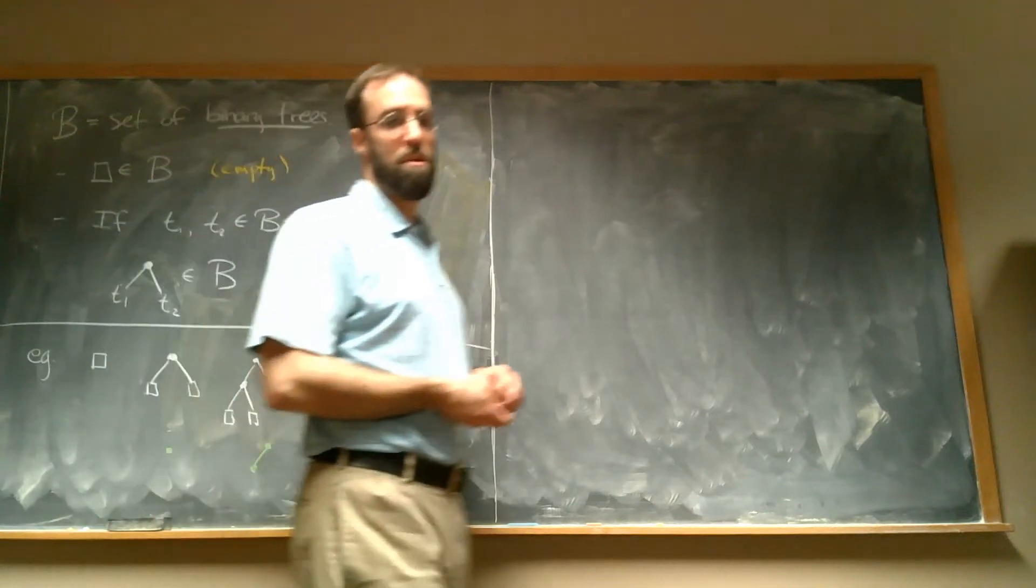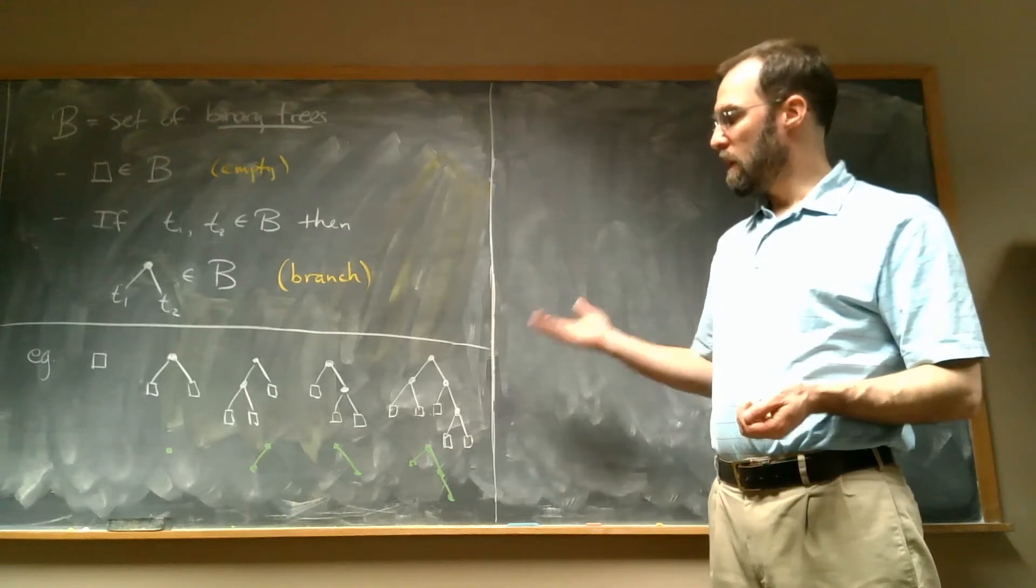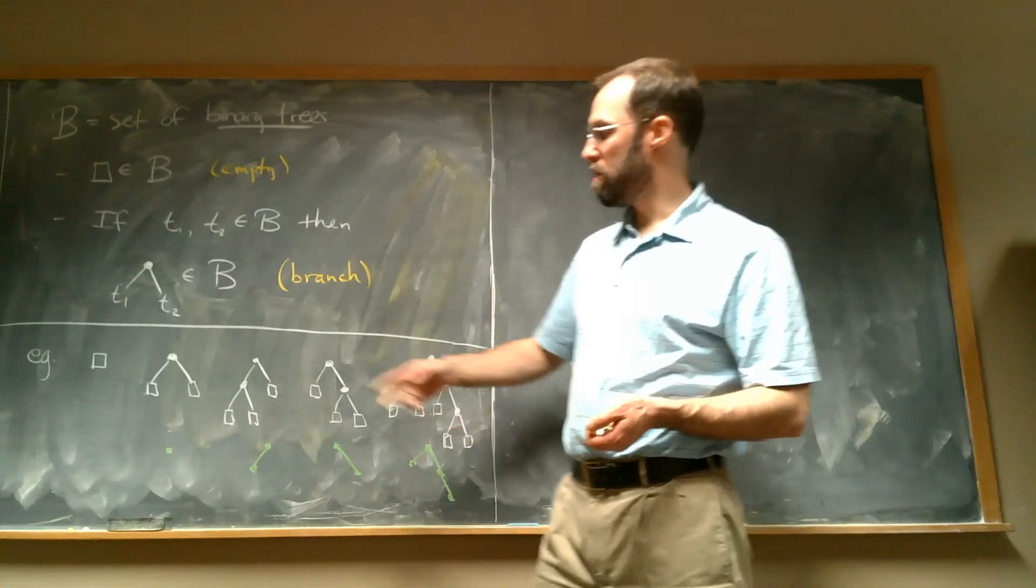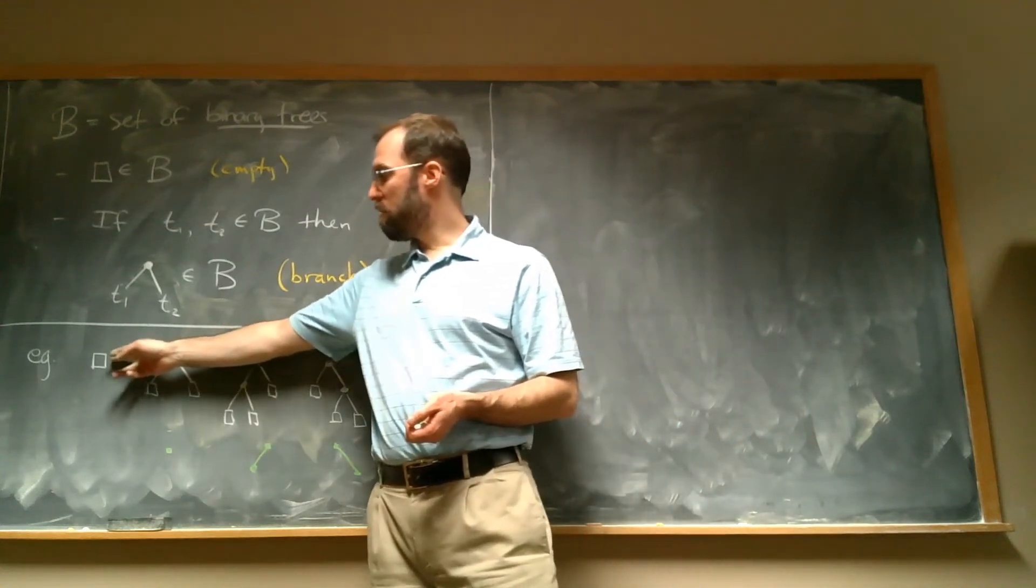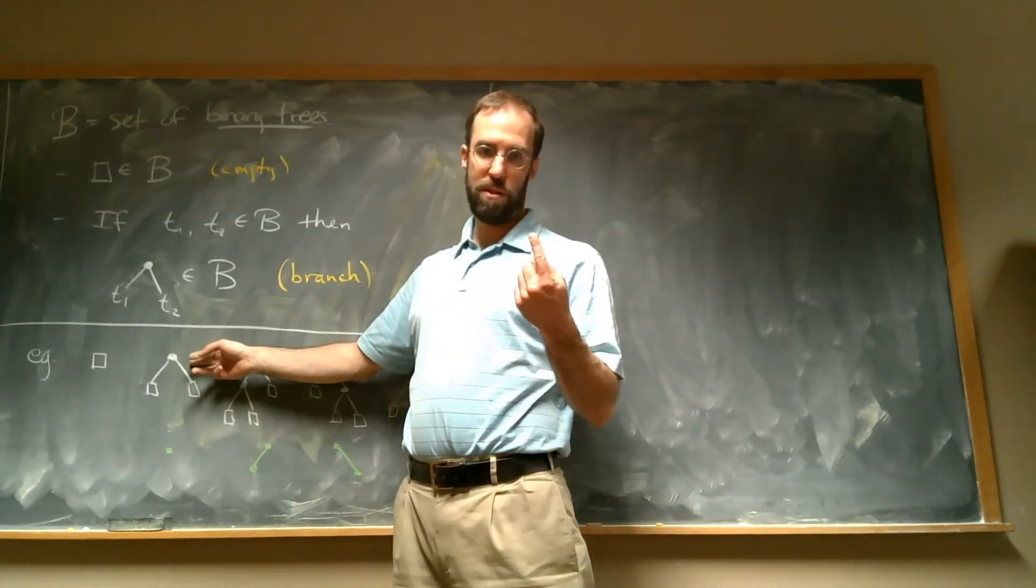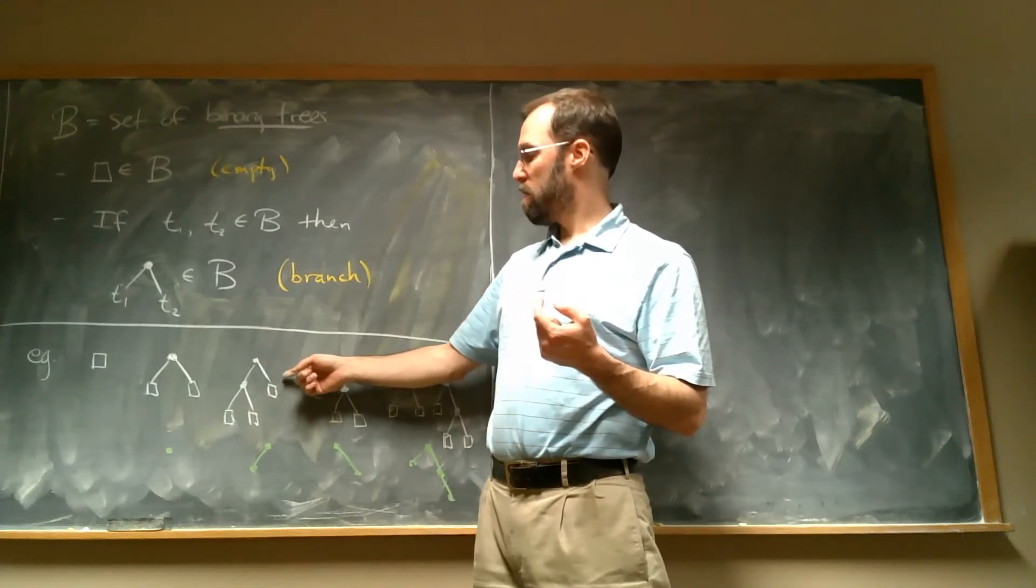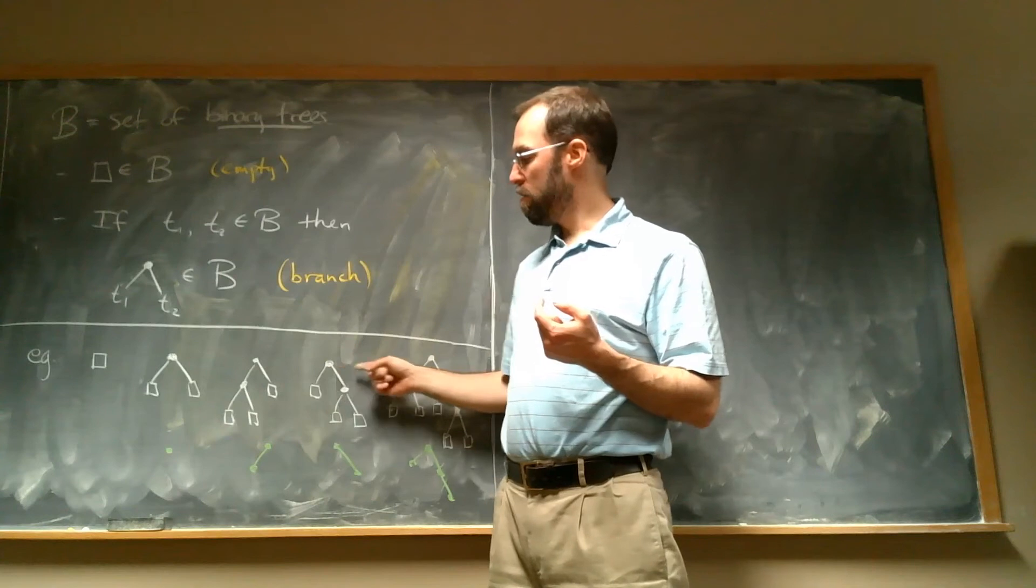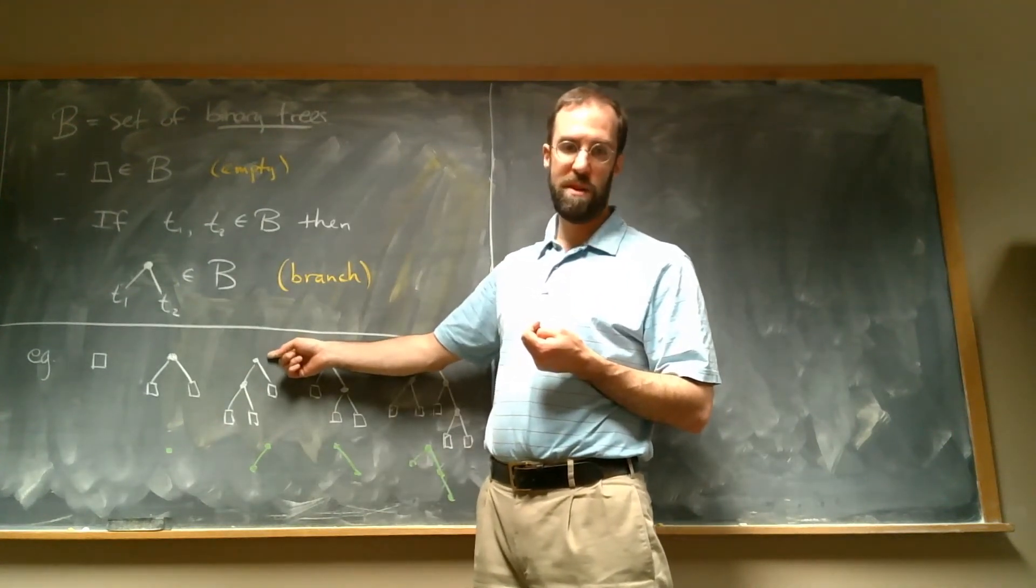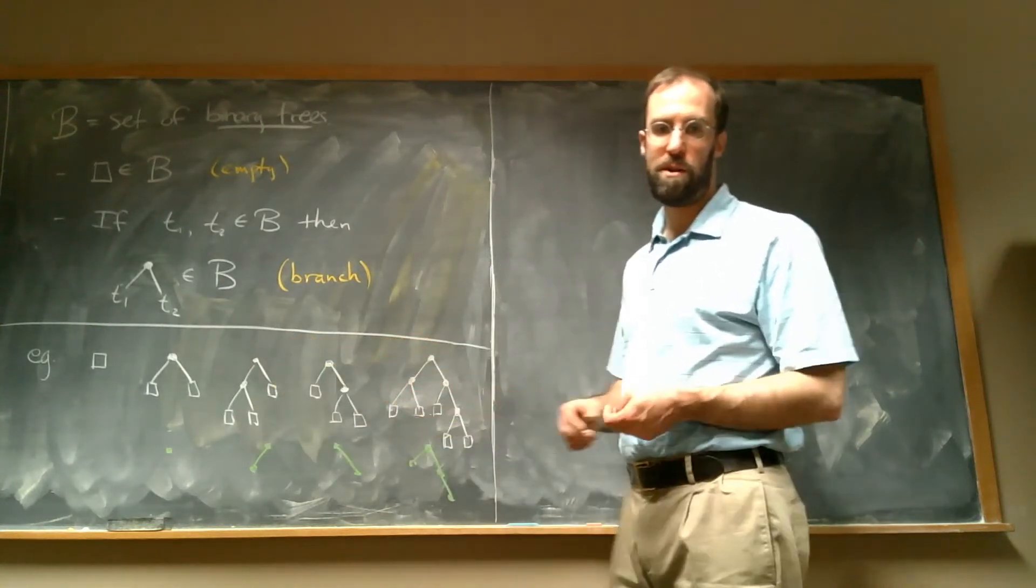So the question that I posed in class, that I'll pose again here is, how many trees are there with a certain number of branch nodes? It's pretty easy to see that this is the only tree with zero branches. And this is the only tree with only one branch, right there it is. And we also figured out that these are the only two trees with two branches, because I have to have one at the top, and then if I want one more, I've got to either put it on the left or on the right, and those are really my only two choices.